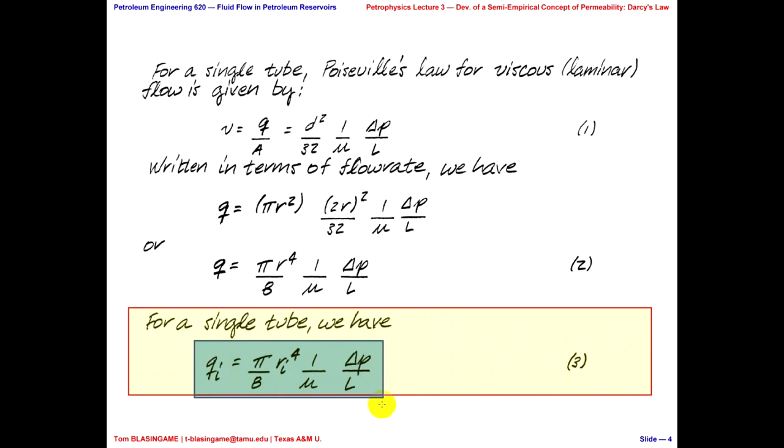So we end up with pi over 8 r to the 4th. So for a single tube, this is not Darcy's Law yet. This is a single tube, Poiseuille's Law, we can represent it by this equation. And of course, everybody's saying, well, okay, the very first thing you notice is the radii is raised to the 4th power. Yep, that's right. Because it's a combination of the diameter term, excuse me, and the cross-sectional area.